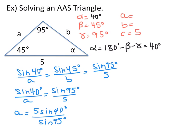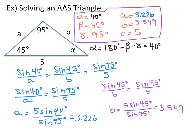When you plug this into your calculator, make sure it's in degree mode and close your parentheses on the 40 degrees. It should be 5 times sine of 40 degrees, close parenthesis, then divide. You get A equals 3.226. Always round to three decimal places — this is a side length, so no degree symbol needed. Now pause the video and solve for side length B the same way. You get B equals 5 times sine of 45 degrees divided by sine of 95 degrees, which is 3.549.